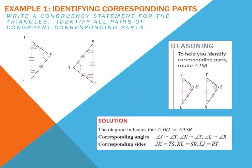Our congruency statements include comparing the two figures: triangle JKL is congruent to triangle TSR. The three pairs of corresponding angles are: angle J congruent to angle T, angle K congruent to angle S, and angle L congruent to angle R. The three pairs of corresponding sides are: side JK congruent to side TS, side KL congruent to side SR, and side LJ congruent to RT.